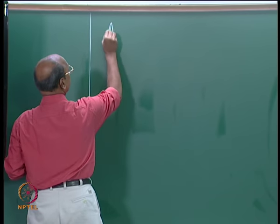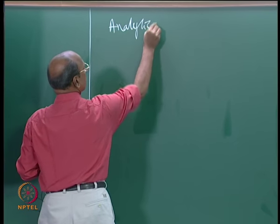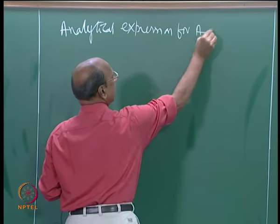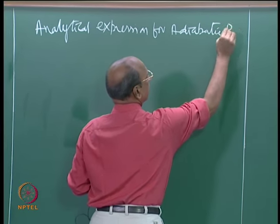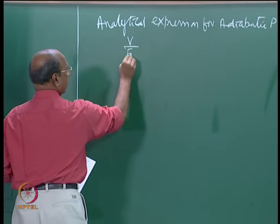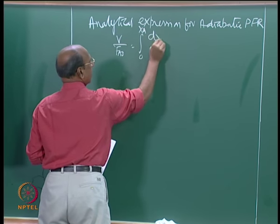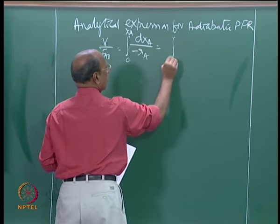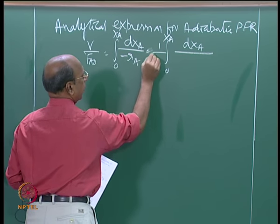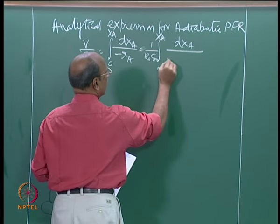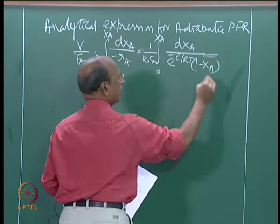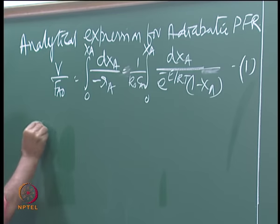This is the adiabatic analytical expression for an adiabatic PFR. The equation we know is V/F_A0 equal to the integral from 0 to X_A of dX_A divided by minus R_A, which can also be written as the integral from 0 to X_A of dX_A over K_0 * C_A0 * e^(−E/RT) * (1 − X_A). This is equation 1.